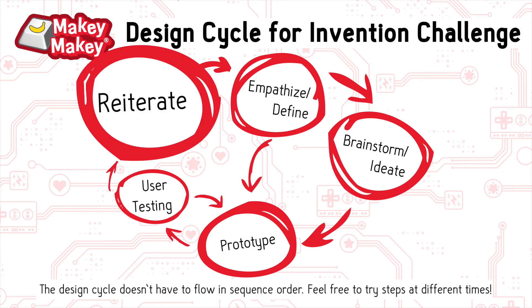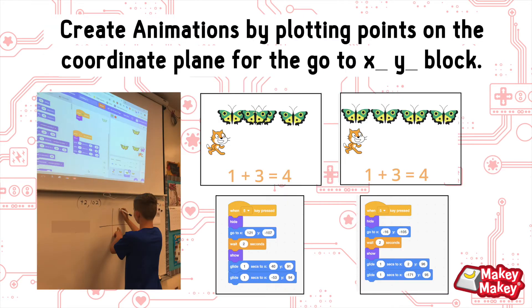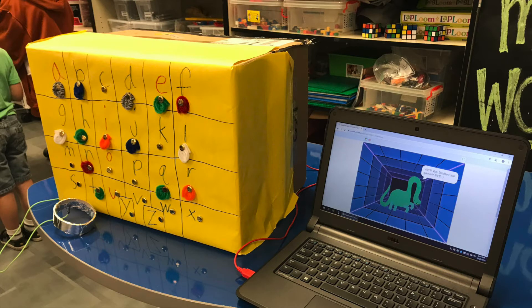You might find that after they try it they're still having problems, so you have to reiterate and continue to make new things. You can learn some foundational Scratch blocks to make the animation better in your coding, and you might find you have to rework some aspects of your project. Our students noticed that kindergarteners were learning their vowels, so they changed the color of the vowels on their literacy games.